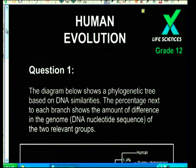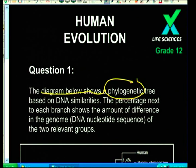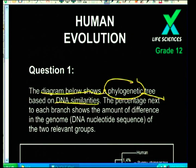Question one: look at the diagram showing the phylogenetic tree - they're going to look at DNA similarities and the differences between the genomes. Remember what genomes are - your genes, what makes you up. This part of the paper always links to genetics; evolution is a change in genetics, so it's all connected.